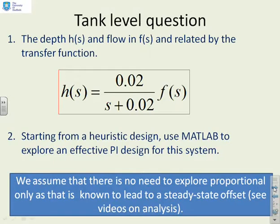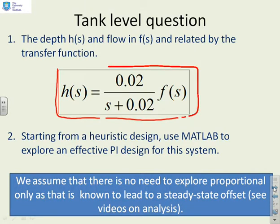First question. Given that the model for a tank level system with H representing depth and F representing flow is given here, what we want you to do is design a PI compensator to control the depth. We're assuming that it will be PI, not just proportional, because otherwise we know you'll get a steady state offset. What we'd like you to do is use MATLAB tools in order to do this. We've already got some MATLAB tools, but you will need to generate your own.